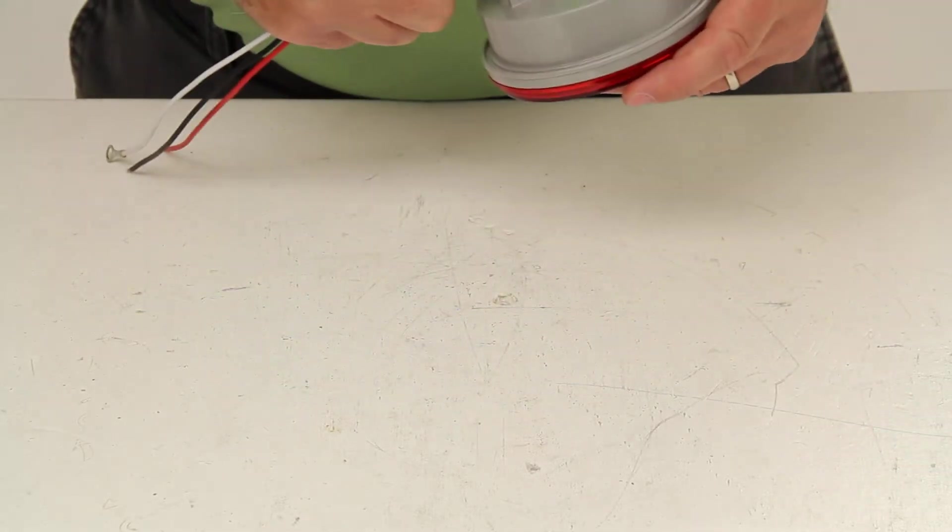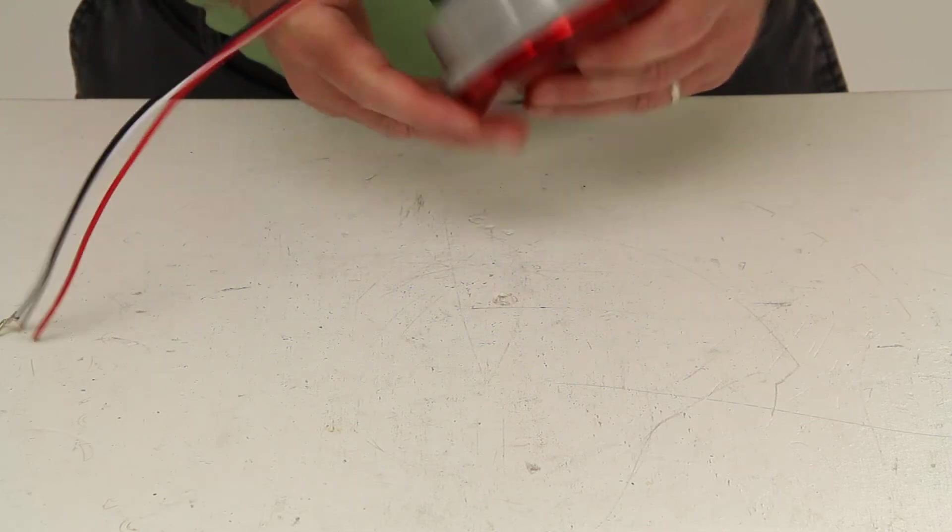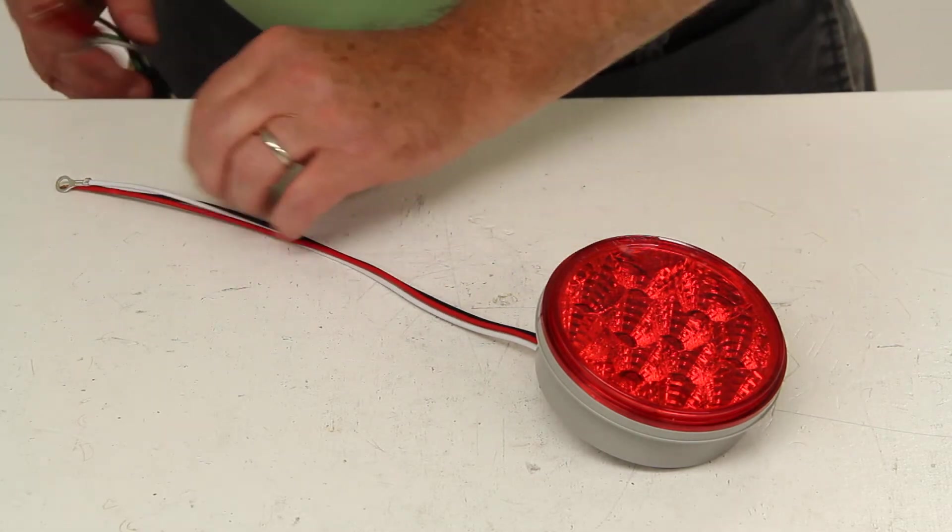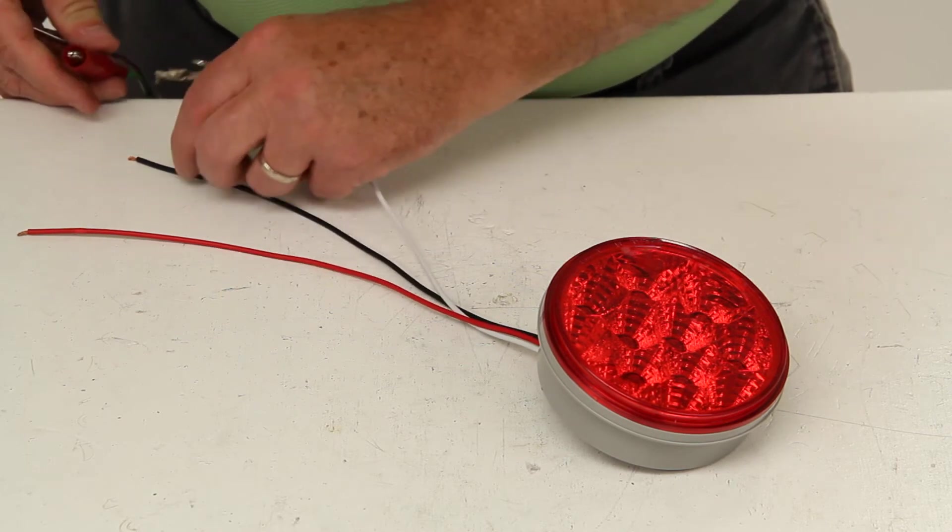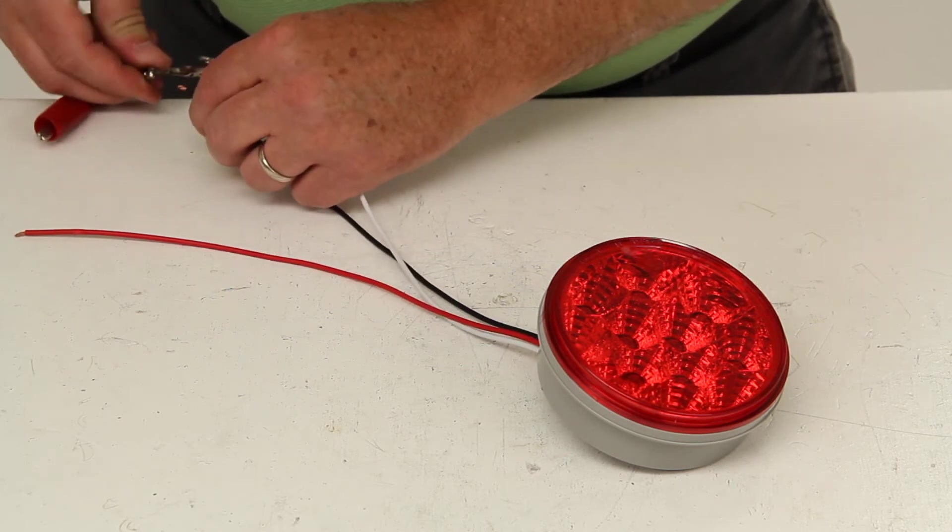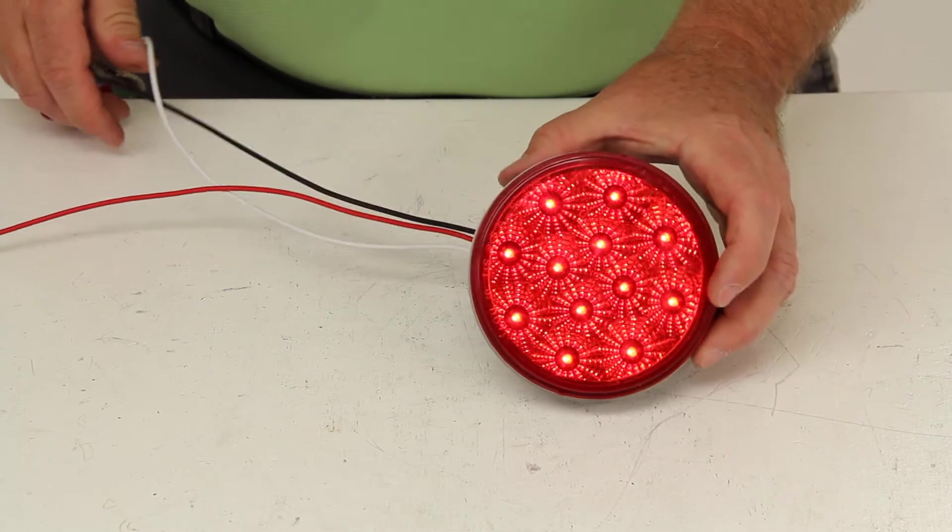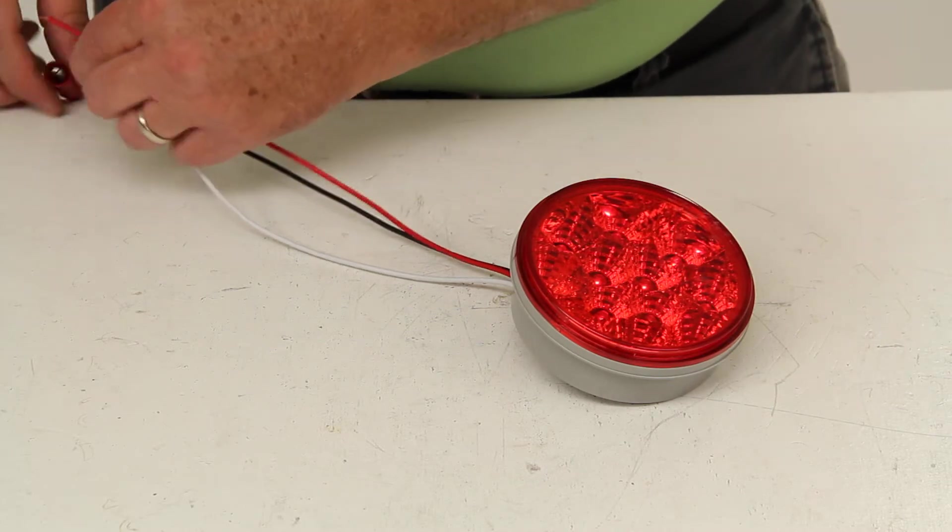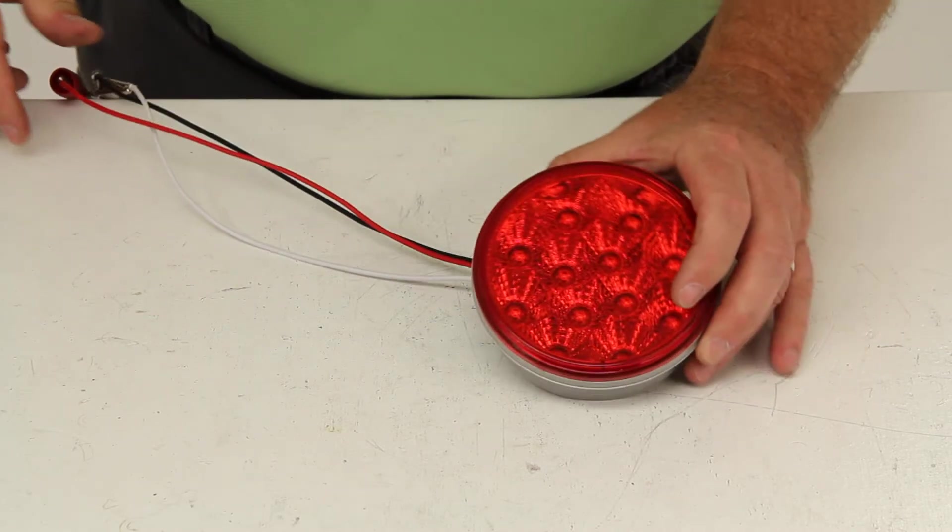Now we're going to hook it up and give you an idea of the brightness. So I plug in the three-prong adapter and I have a power supply here. We'll hook up the white to the ground and the black to the tail lights. That will give you an idea of the tail lights with the lights on. And then we'll hook up the stop and turn.